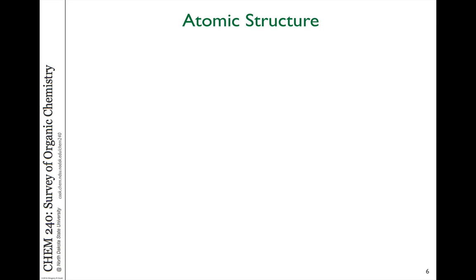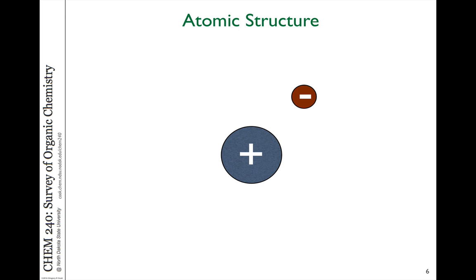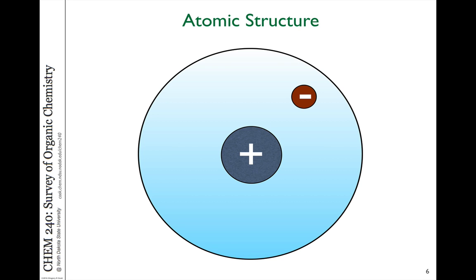Let's take the simplest of all atoms — the hydrogen atom. The hydrogen atom contains one proton, one electron, and no neutrons. The proton is indicated at the nucleus as a plus charge because protons are positively charged, and surrounding that is an electron. In a neutral atom, the number of protons equals the number of electrons. That electron resides in a space where it's most likely to be found, which we call an orbital.